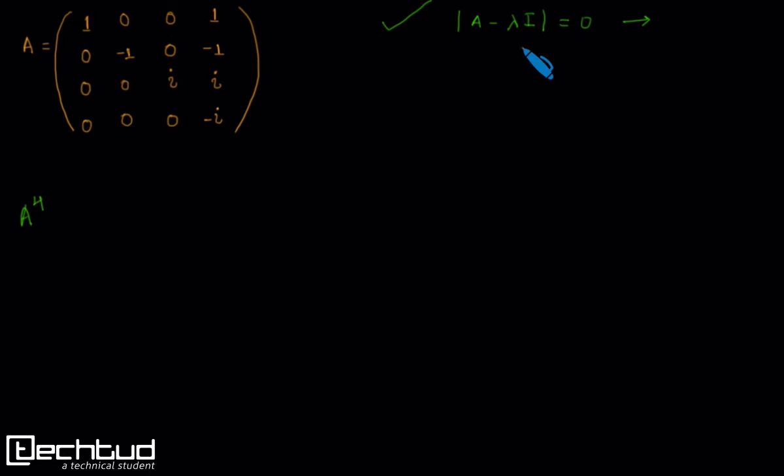This is the characteristic equation where lambda is the eigenvalue. According to Cayley-Hamilton theorem, the matrix A will satisfy the characteristic equation obtained here. So let's first find out what will be the characteristic equation. We are given this matrix A and we are subtracting lambda multiplied by identity matrix.